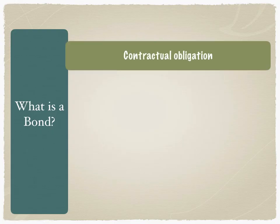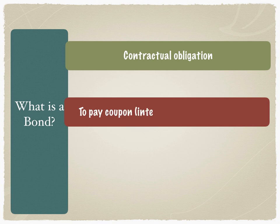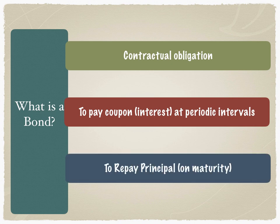What is a bond? A bond is a contractual obligation to pay coupon — that's the technical term for interest — at periodic intervals, and to repay the principal on maturity. This is a contractual obligation between the lender and the borrower, or in the case of bonds, we use the term issuer and investor. The issuer is the borrower; they agree to pay the coupon at periodic intervals and to repay the principal on maturity. The lender has lent the money for the said duration.